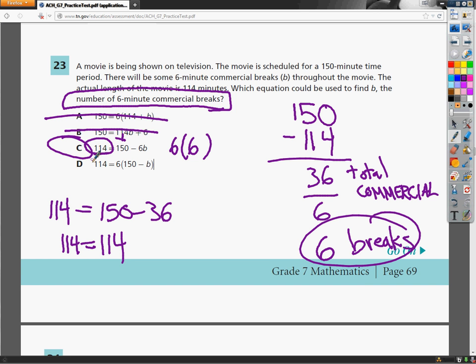The other one says I'm going to take the movie, subtract 6 breaks from it of some random value we don't even know, multiply that number times 6, and it should give me 114. Spoiler alert, it does not, because 150 minus 6 gives you 144. Multiply that times 6, and it gives you 864, which does not make that true.